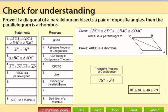And the next reason is property of parallelograms. And what we're going to do here is we're going to say the segment DC is congruent to segment BA. Opposite sides of a parallelogram are congruent.